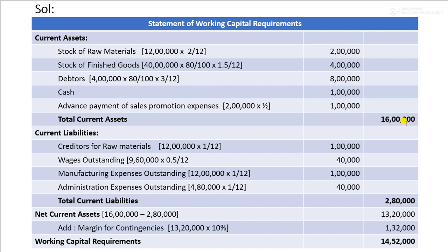Total current assets amount to 16 lakhs. Current liabilities include: creditors for raw materials 1 lakh, outstanding wages 9,60,000 for 15 days (0.5 by 12) giving 40,000, manufacturing expenses outstanding for 1 month (12 lakh into 1 by 12) giving 1 lakh, administration expenses outstanding (4,80,000 into 1 by 12) giving 40,000. Total current liabilities are 2 lakh 80,000, and the net current asset is 13 lakh 20,000.